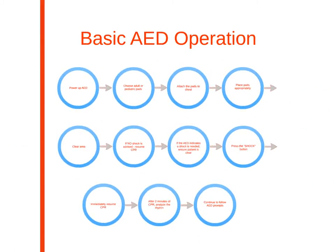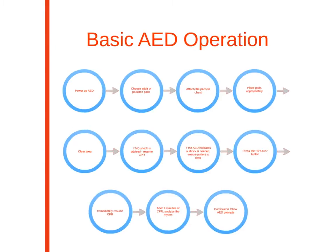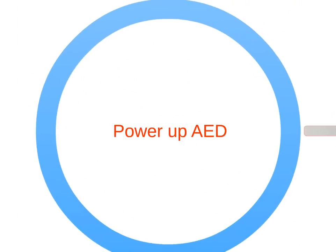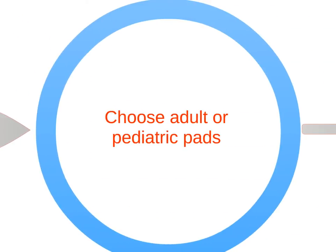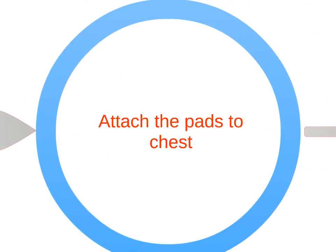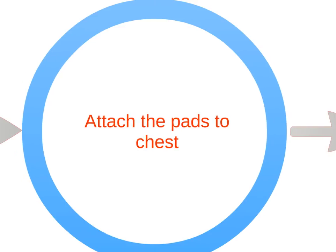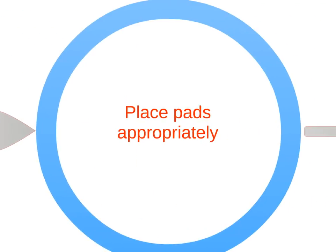Here is the basic AED operation. Power up the AED. Choose the appropriate pads. Attach the pads to the bare chest and make sure cables are connected. Place one pad on the upper right side, and the other on the chest a few inches below the left arm.